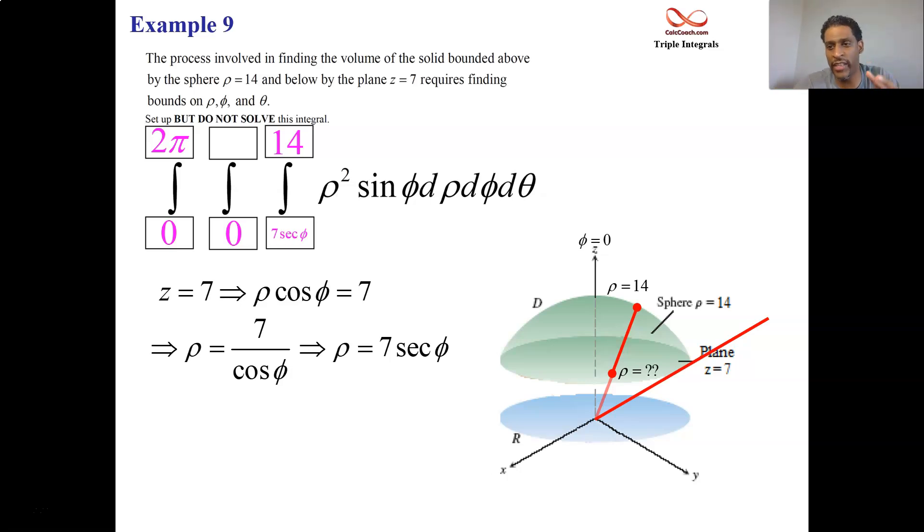What's the phi for that? So both these equations are true at the same time. Rho is equal to 14 and z is equal to 7. And so to figure out phi for that upper bound on phi, we have to take into account both rho is equal to 14 and z is equal to 7. And the equation that involves those is the fact that z is rho cosine phi.